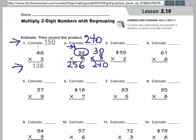24 plus 1 is 25. So my real answer is 256. That's pretty close to my estimate of 240, so I can be sure that I did my math correctly.